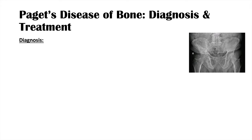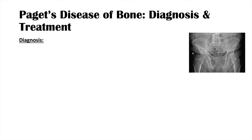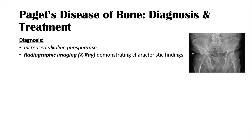Diagnosis of Paget's disease can be aided by looking at alkaline phosphatase levels — increased and coming from bone, so GGT is normal. We also look at radiographic imaging. X-ray findings demonstrate characteristic features including deformities of the bone, thickened cortices, tunneling of the bone, and enlarged and dense bones. You can see in this image how one area is more dense than another.